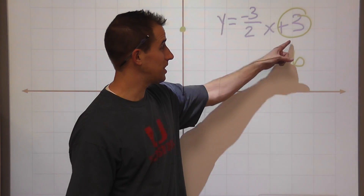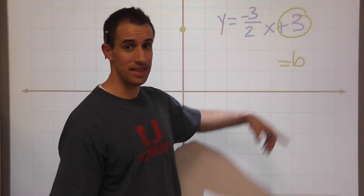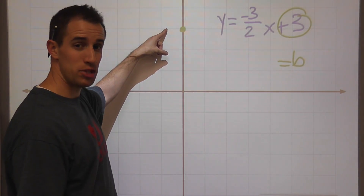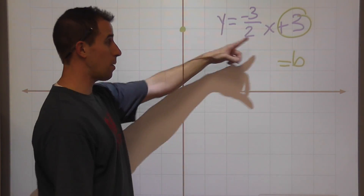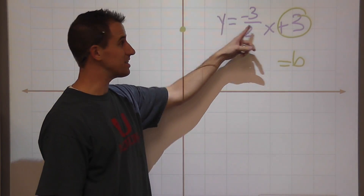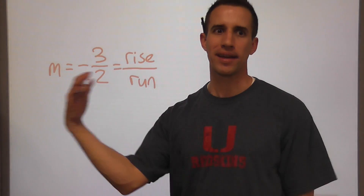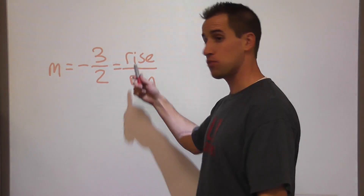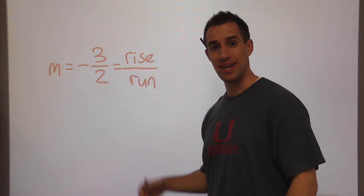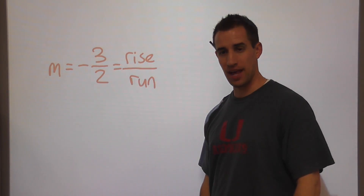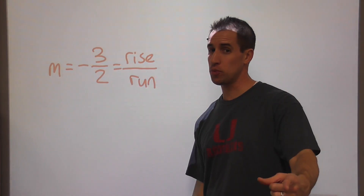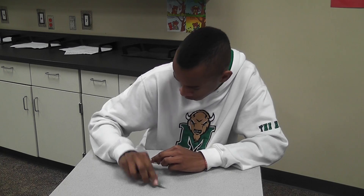Graphing equations — the slope by itself without the X is B. Put a point on the Y where it's at, you see. The number by the X is M. Is what? The slope, kid. Now listen while you're taught. It's rise over run, the steepness of the line. From the B, use the slope and a new point you'll find.